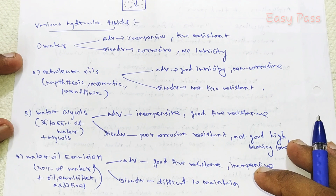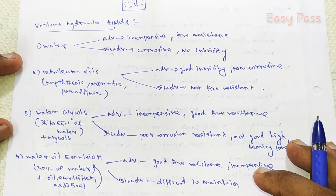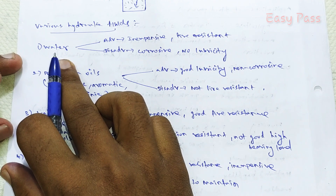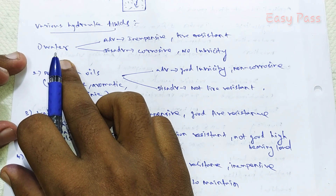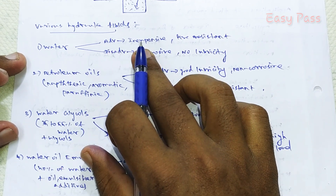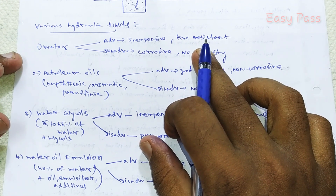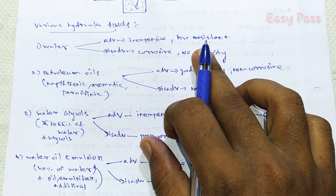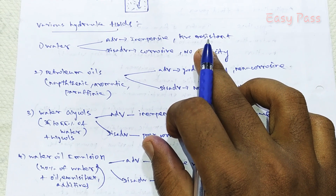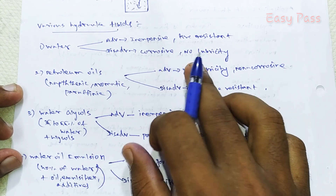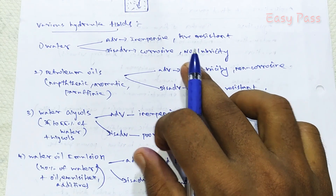We are going to talk about water. Water is easy to use. It is a very cheap fluid. Water also has disadvantages. It is a low cost fluid and it has fire resistance.